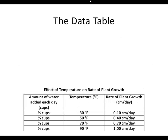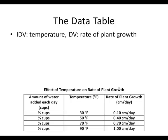Another big part of laboratory concepts is the data table. The data table here shows the effect of temperature on the rate of plant growth. The dependent variable is the rate of plant growth — that's what we're trying to measure, and you can see it in this column. The independent variable is temperature, which is what changes from trial to trial.